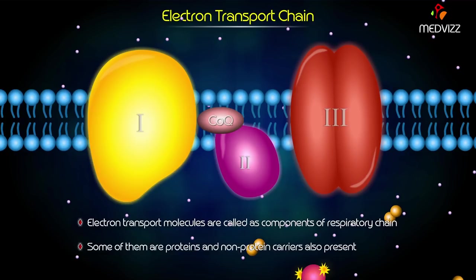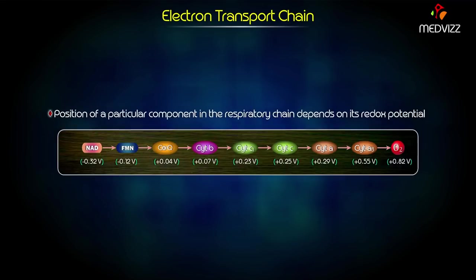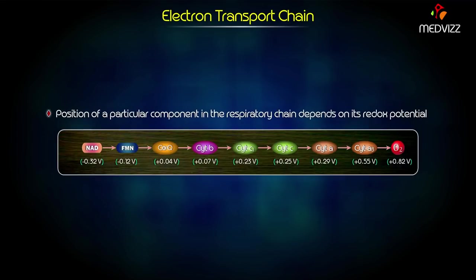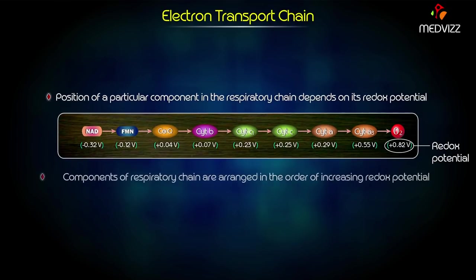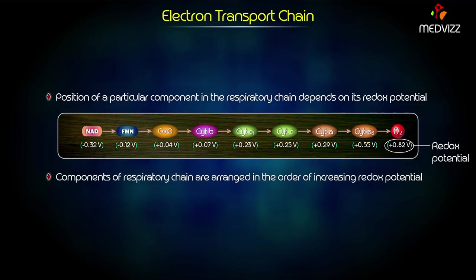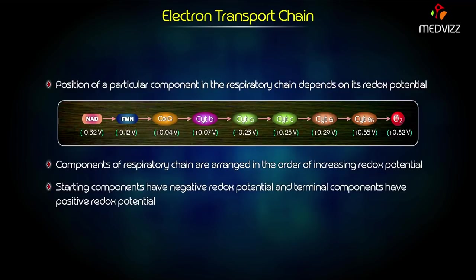Some of the components are proteins; however, non-protein carriers are also present. The position of a particular component in the respiratory chain depends on its redox potential. The components are arranged in the order of increasing redox potential. Starting compounds have negative redox potentials and terminal components have positive redox potentials.